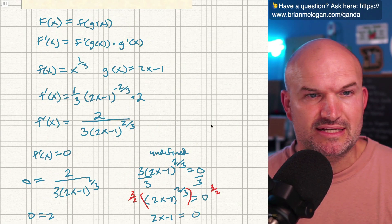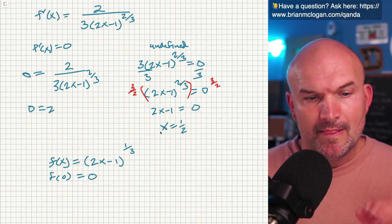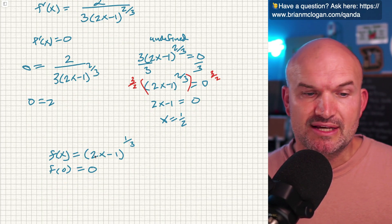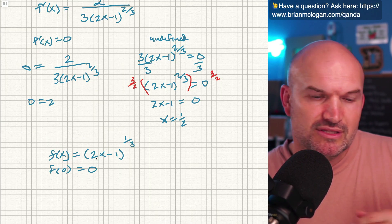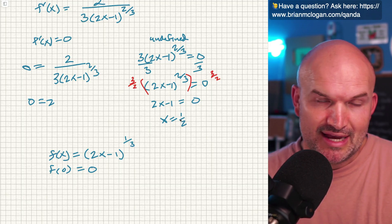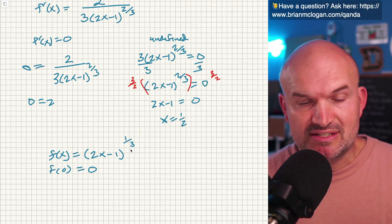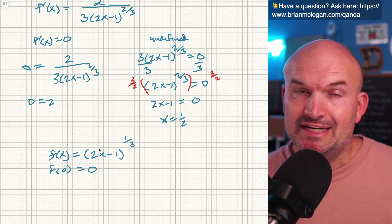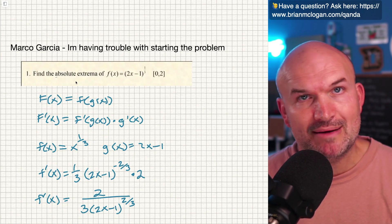The question is whether this is an absolute maximum or minimum. When you plug in those surrounding points, the point to the left of 1/2 is below it, and any point to the right of 1/2 — between 1/2 and 2 — is going to be above this value. So on the interval from 0 to 2, this graph is always increasing. Therefore, for this problem, there is no absolute extrema.